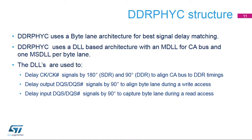DDRPHYC uses a byte lane architecture so that all signals in a group are closely matched. It uses a master DLL, or MDLL, for command address signals to the SDRAM memory, and a master-slave DLL, or MSDLL, for each byte lane group. MSDLL tunes the CK-CK# delay by 180 degrees in SDR mode for DDR3L devices, and by 90 degrees in DDR mode for LPDDR2 and LPDDR3 devices. MSDLL is also used to delay DQS-DQS# output signals by 90 degrees to center-align write data, and to delay DQS-DQS# input signals by 90 degrees to center-align read data.